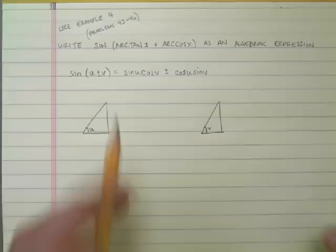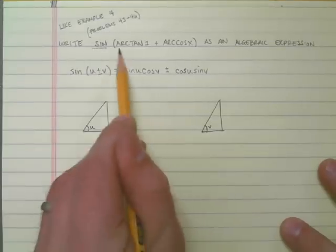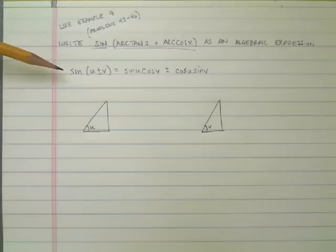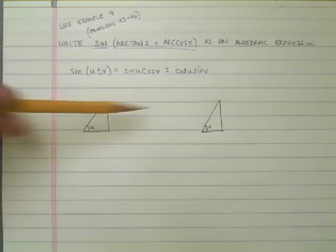Now, first thing I notice is because I have the sine of two things that I'm adding together, obviously we're going to use the formula sin(u + v). So I need to determine what u and v are.